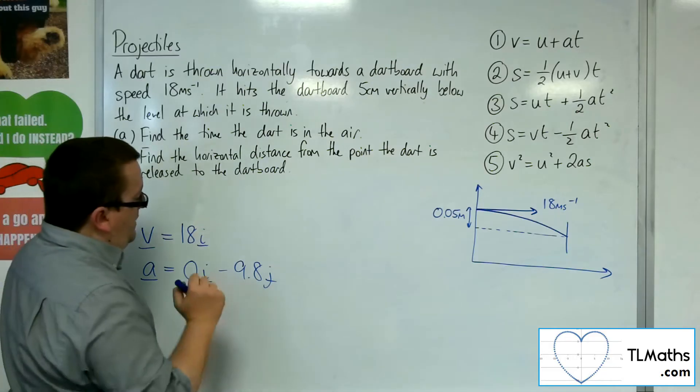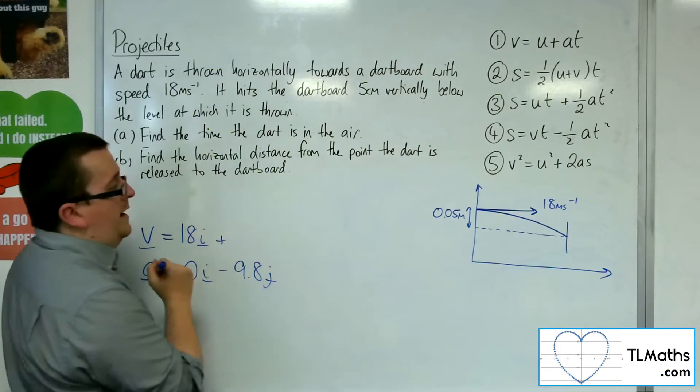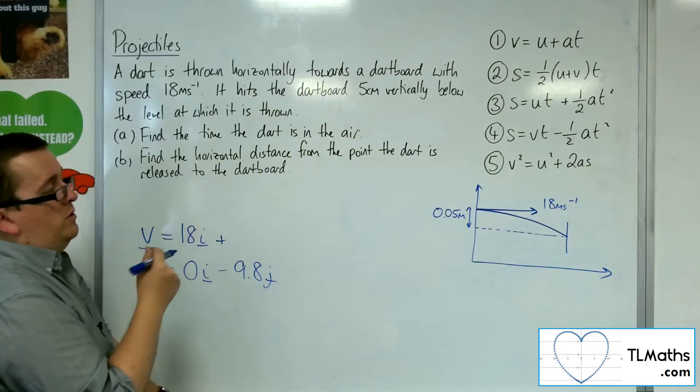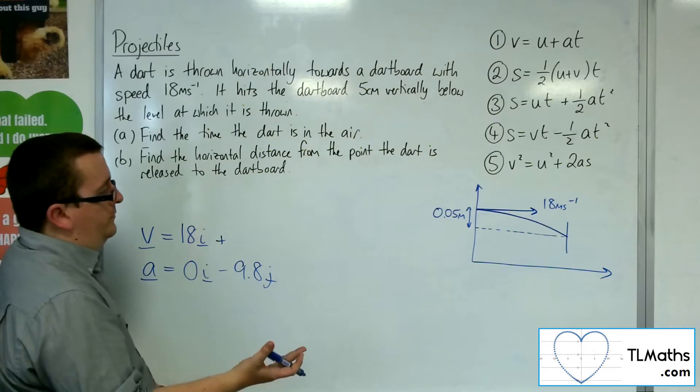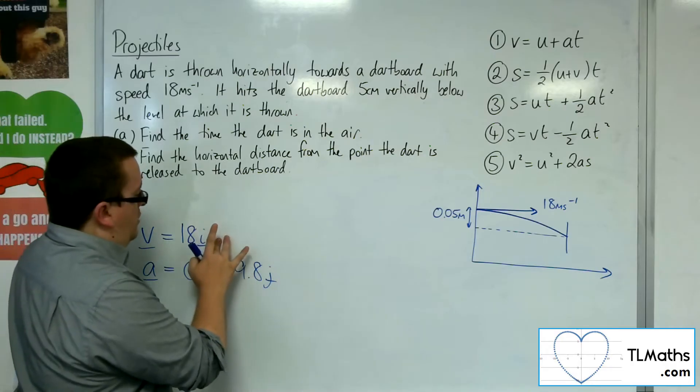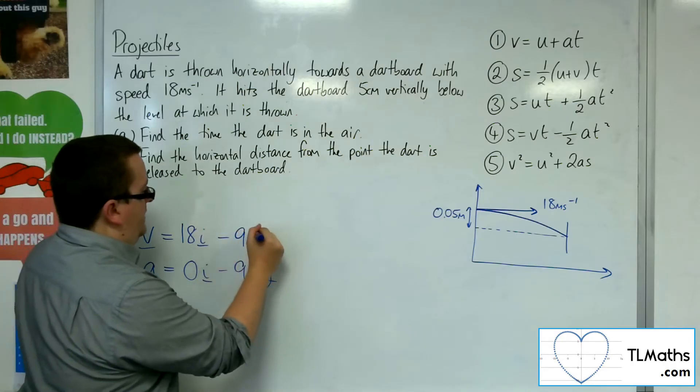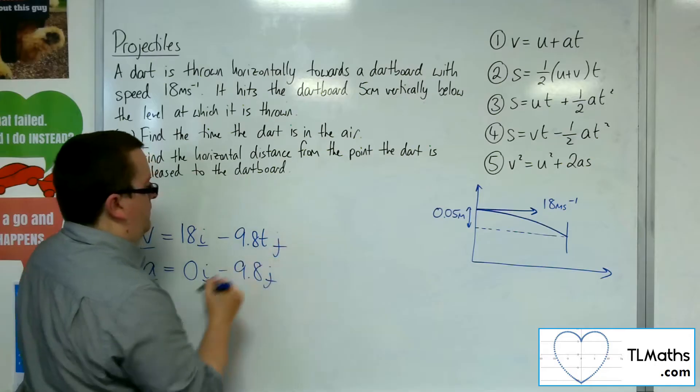And then integrating here, we're going to add in the initial condition, which will be 18 sin 0, which is just 0. So really, we've just got minus 9.8 tj.